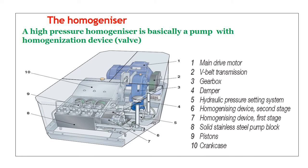Here once again we can see a detailed diagram of a homogenizer. Basically, it is a high-pressure homogenizer with a pump and a homogenization device, that is, a valve — these two things are very important. In the diagram, we can see there are 10 basic components: main drive motor, V-belt transmission, gearbox, damper, hydraulic pressure setting system, homogenizing device for the second phase, homogenizing device for the first phase, solid stainless steel pump block, piston, and crank case.